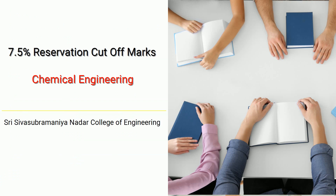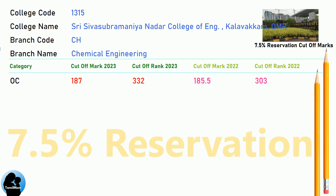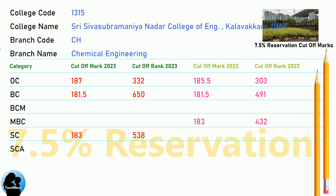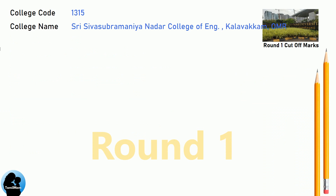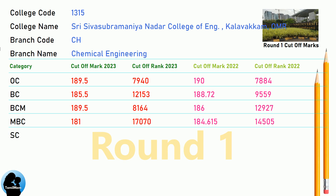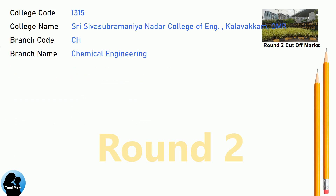DNA 7.5 Reservation Cut-Off for Shree Ifsu Brahmaniya Nadar College of Engineering in Chemical Engineering. DNA Round 1 Cut-Off for Shree Ifsu Brahmaniya Nadar College of Engineering in Chemical Engineering. DNA Round 2 Cut-Off for Shree Ifsu Brahmaniya Nadar College of Engineering in Chemical Engineering.